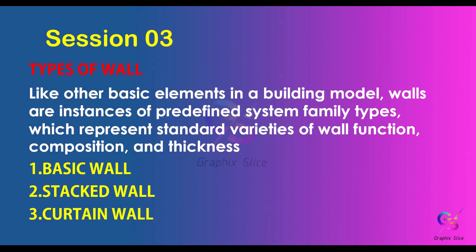We have three types of wall: basic wall, stacked wall, and curtain wall. Basic wall is the most fundamental type with predefined layers and thicknesses, but no predefined materials in generic walls — nearly 18 to 20 types are available. Stacked wall is similar to basic wall but includes foundation parameters. Curtain wall is made up of glass and panels, used for interior partitions and front elevations, mainly in commercial buildings. This session focuses on basic wall; stacked and curtain walls will be covered in the next session.